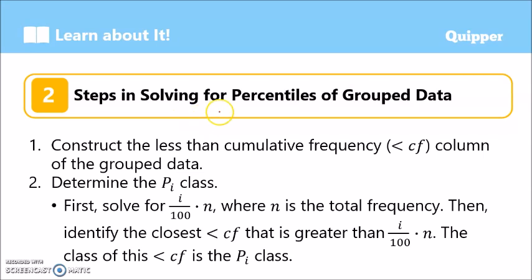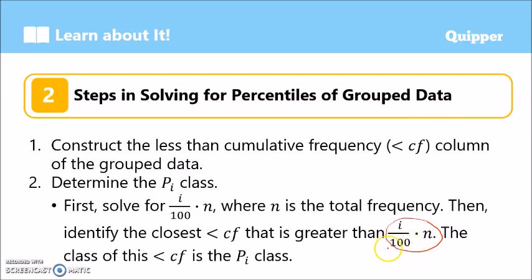So, how do we solve percentiles for group data? The steps are the same as what we had with quartiles and deciles. However, the difference is in the formula denominator — for quartiles it is 4, for deciles it is 10, and for percentiles it is 100. Let's recall the steps in solving for quartiles, deciles, and percentiles of group data.